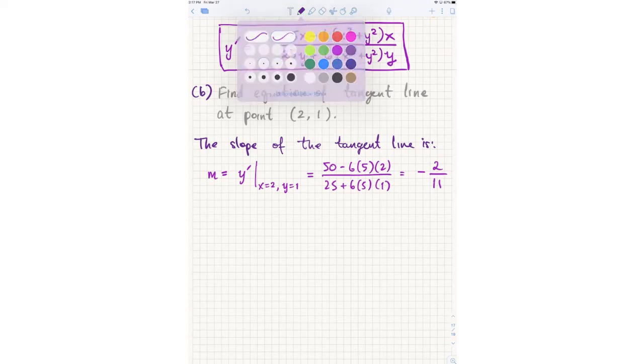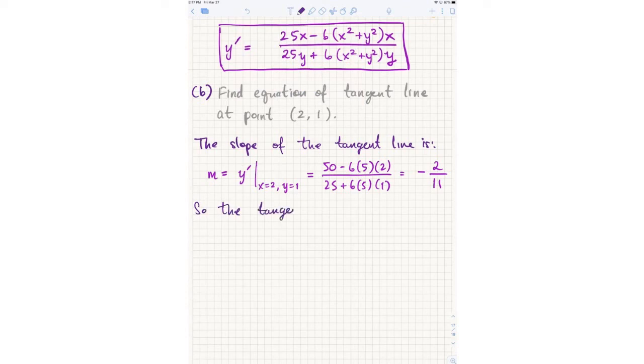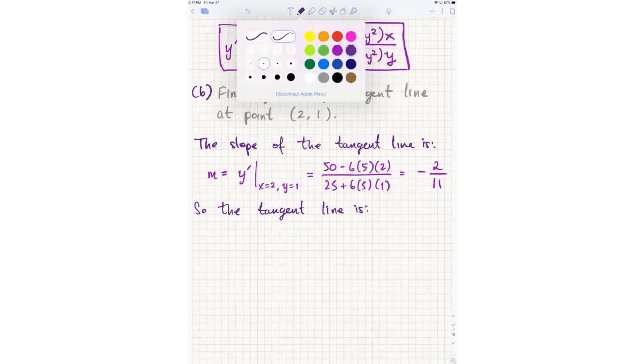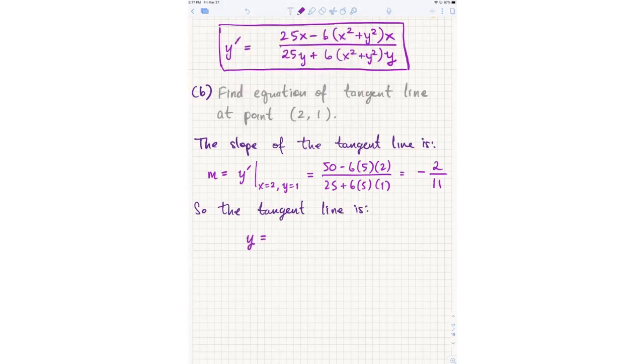So then the tangent line is y equals, the point was (2,1), so 1 - 2/11(x - 2), point slope form. Okay, so that should have been, if you did part A, part B should be kind of a very straightforward, just like an extra, you know, like 20 seconds, right? We know how to find tangent lines. But any questions so far? Angelica?